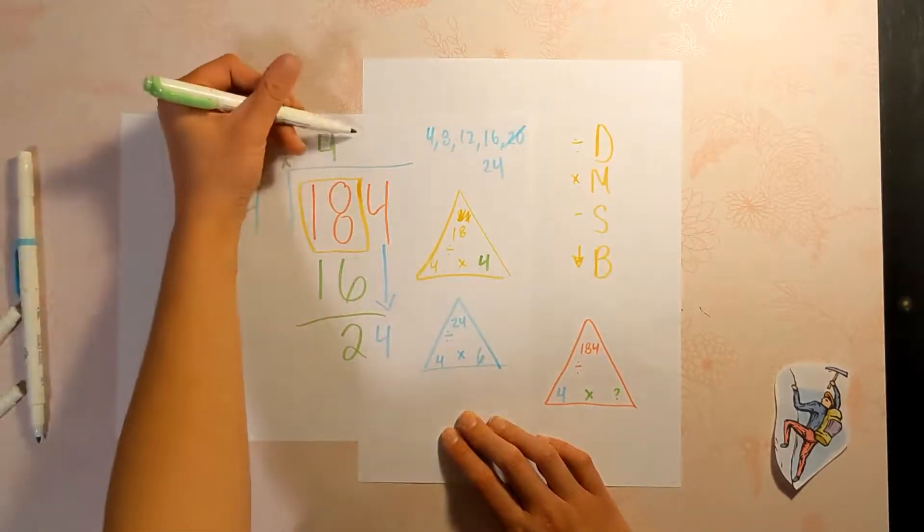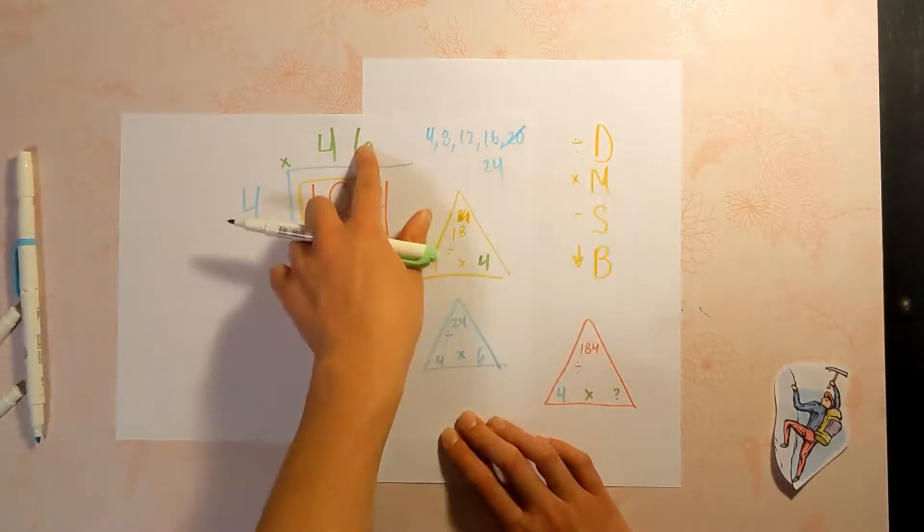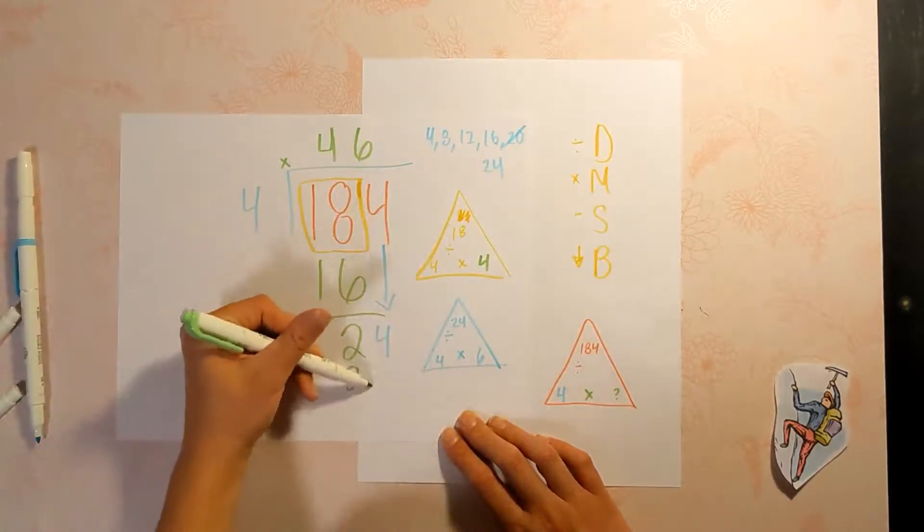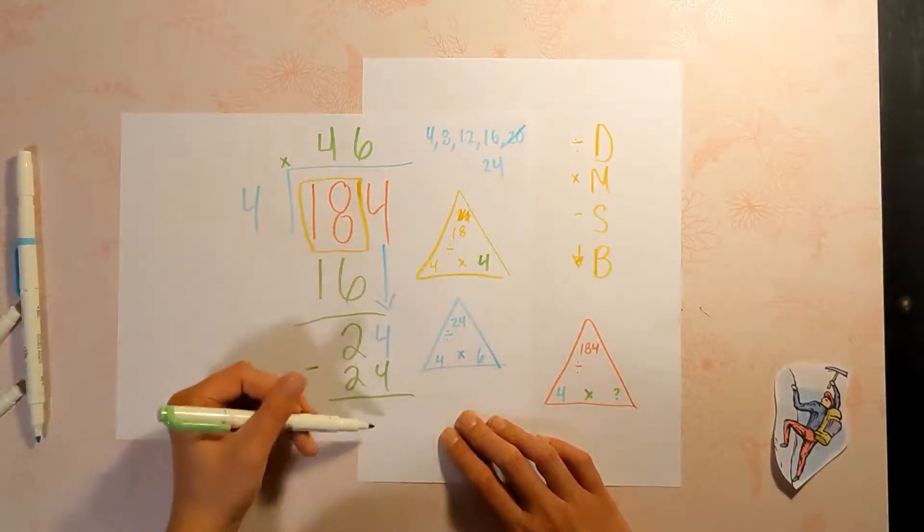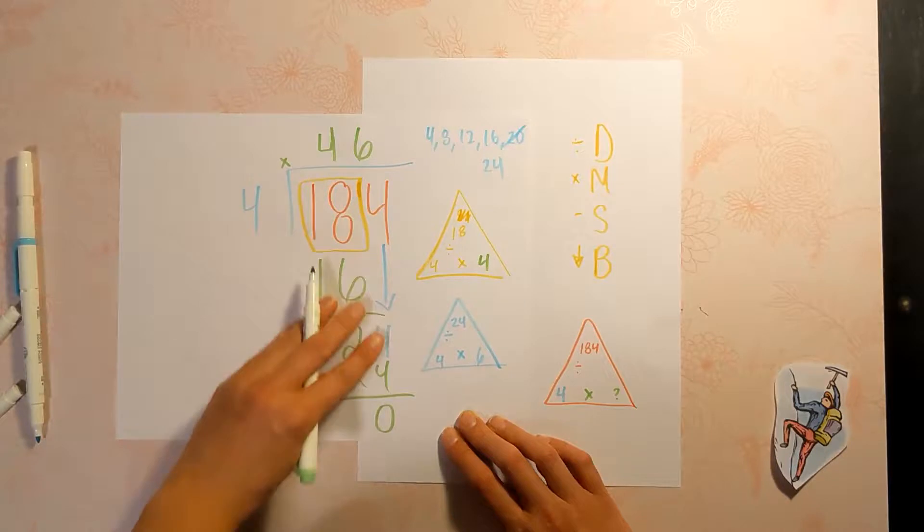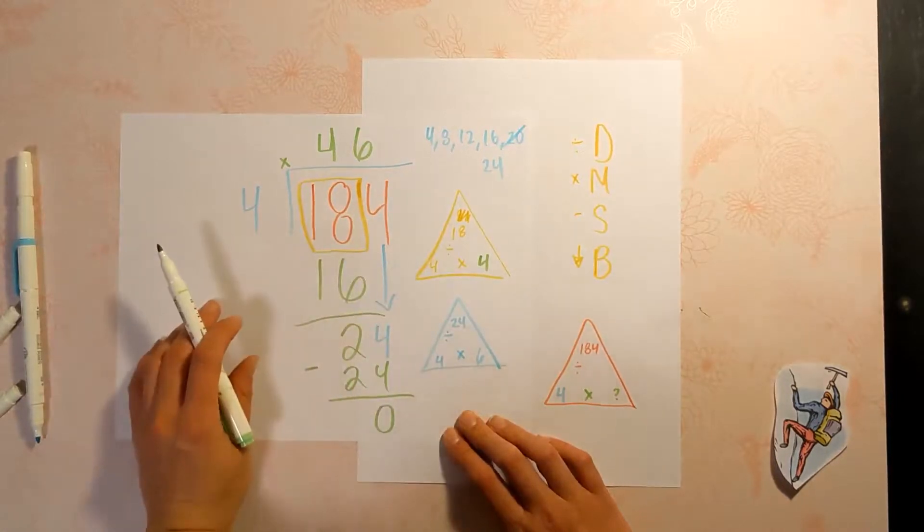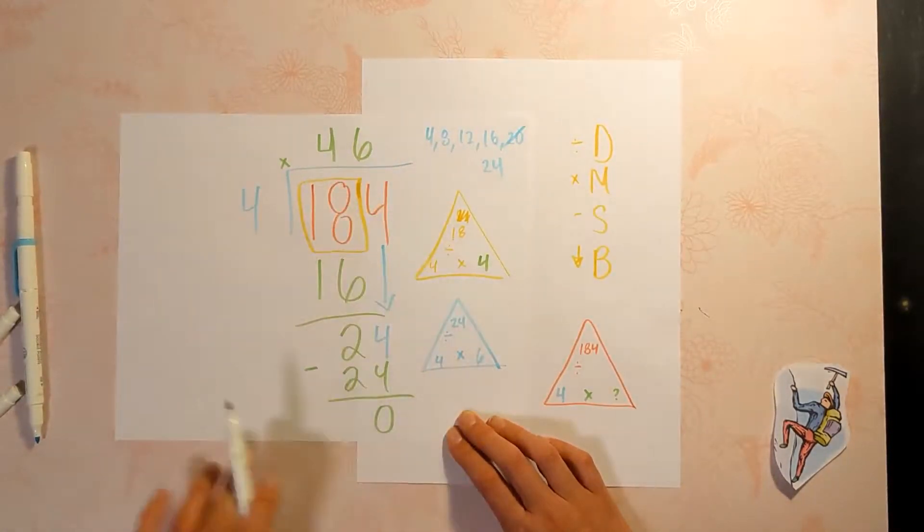So we'll put our six up top. Next step is to multiply: six times four equals 24. And now we're subtracting to see if there's a remainder, and there is not. If there was, then this would be our leftover, but it fit in perfectly. So we have no remainder. Our answer is 46.